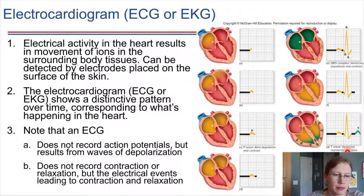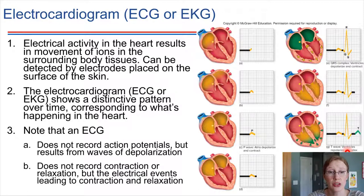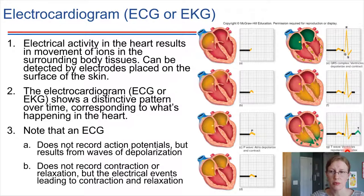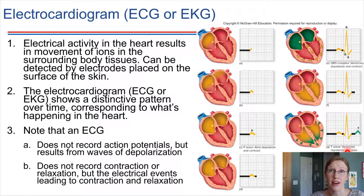This doesn't show us a direct picture of muscle contractions — it's not measuring muscle contractions. Again, it's measuring the depolarization in the vicinity around the heart. Interestingly, we can understand a lot of information about what's going on in the heart just from this snapshot graph, but it's important to keep in mind what it is and what it is not.